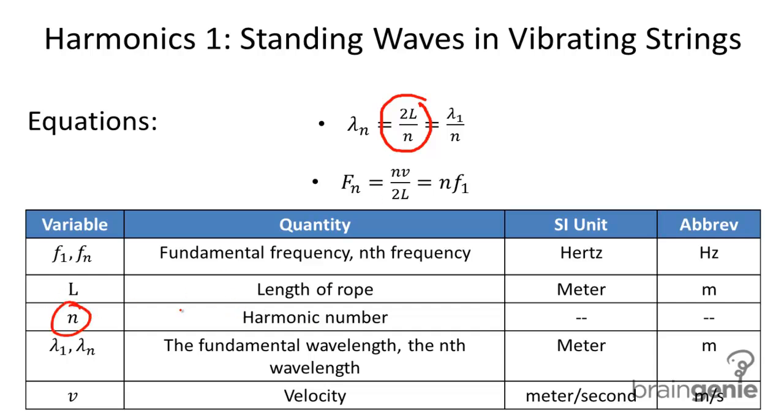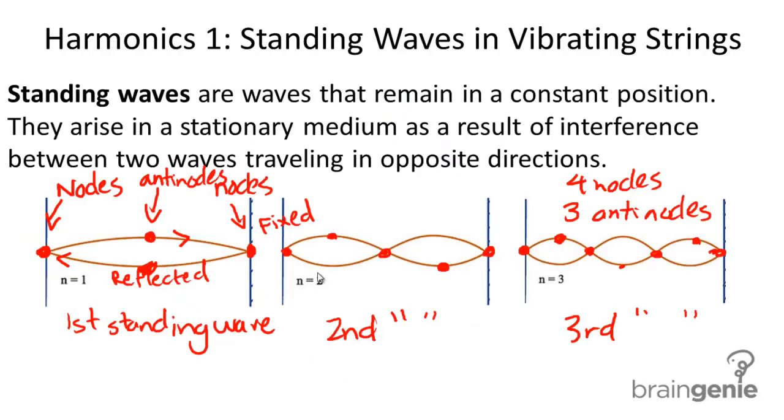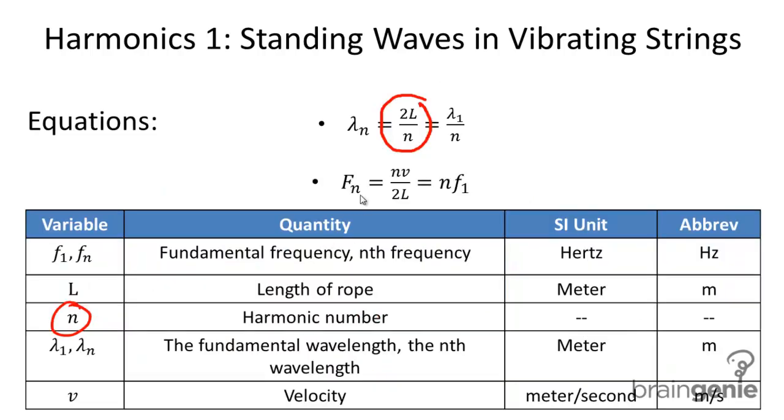So the harmonic number n is basically just what number of the standing wave are we looking at. So for the harmonic number of the first standing wave, the harmonic number would equal one. So n would equal one. For the second standing wave, n would equal two, and so on and so forth. So that's what the harmonic number is.